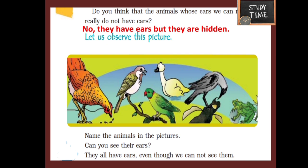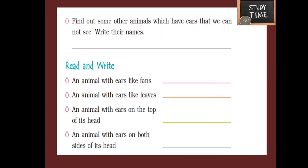Next, observe this picture and name the animals in the picture. Here you can see duck, parrot, frog, sparrow, hen, and crow. They all have ears even though we cannot see them.